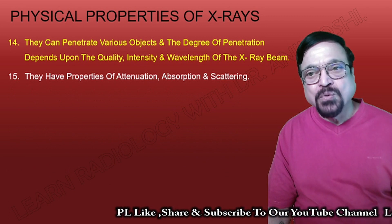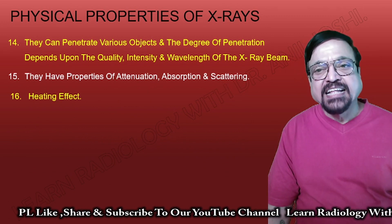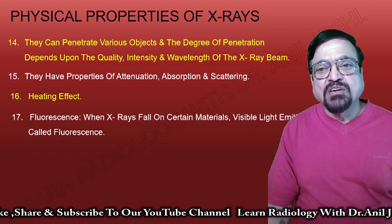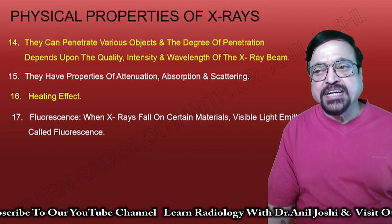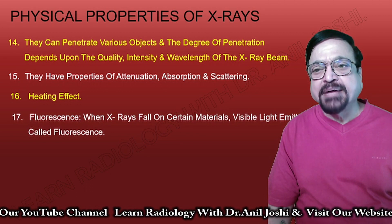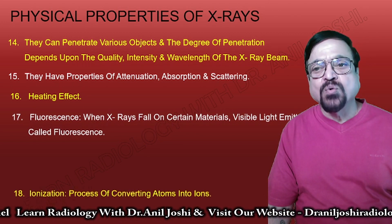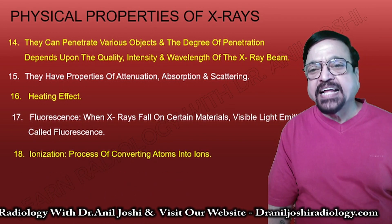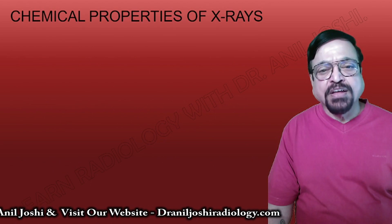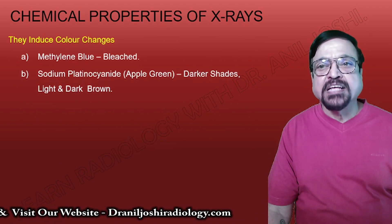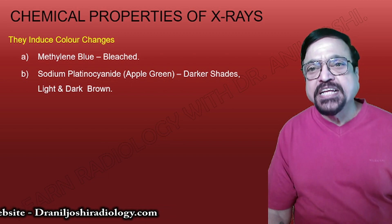X-rays can penetrate various objects, and the degree of penetration depends on the quality, intensity, and wavelength of the X-ray beam. They have properties of attenuation, absorption, and scattering. There is also a heating effect. Fluorescence occurs when X-rays fall on certain materials and visible light is emitted — this is the conversion of X-ray energy into visible light. X-rays can also cause ionization.